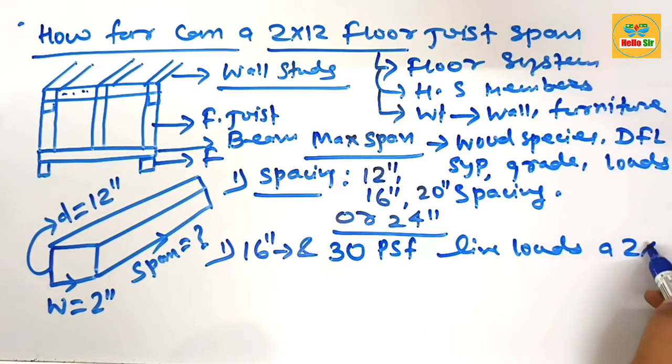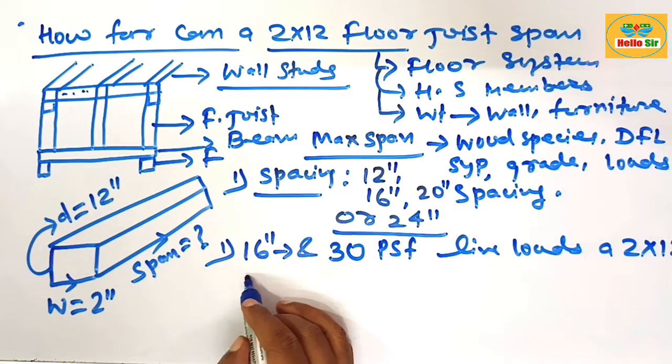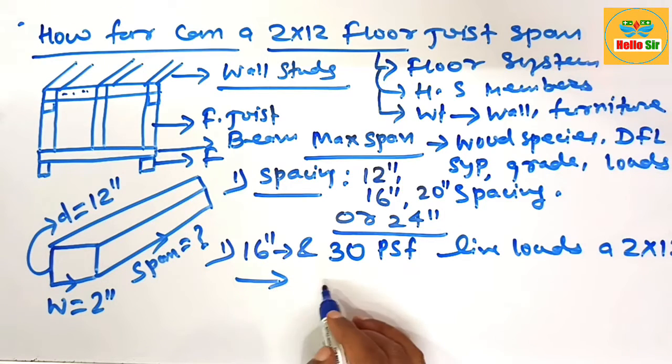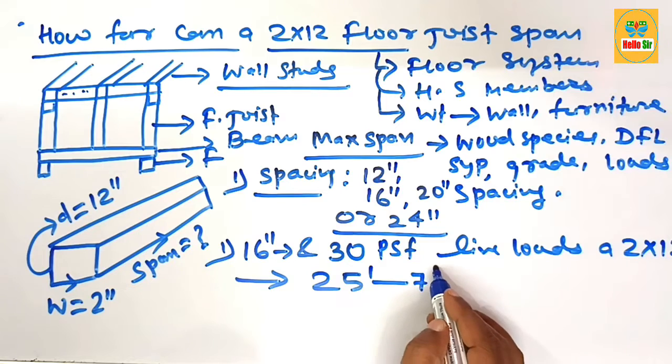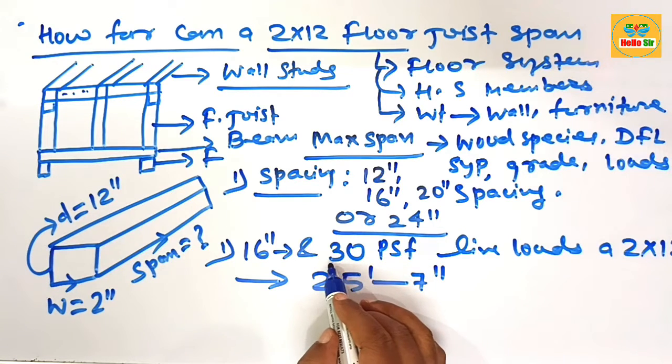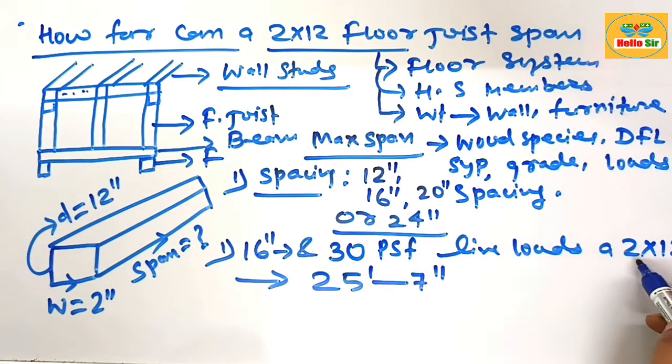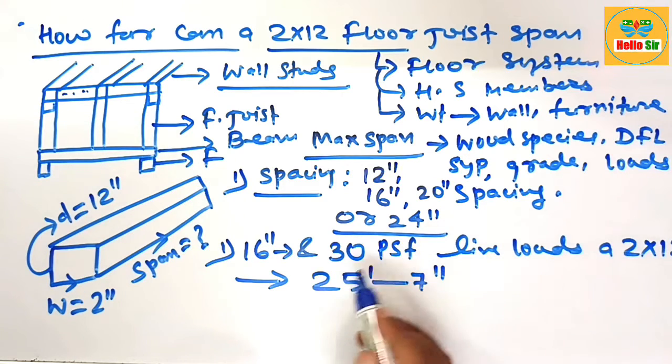A 2 by 12 floor joist can span 25 feet and 7 inches. It means at 30 psf live load, a 2 by 12 floor joist can...